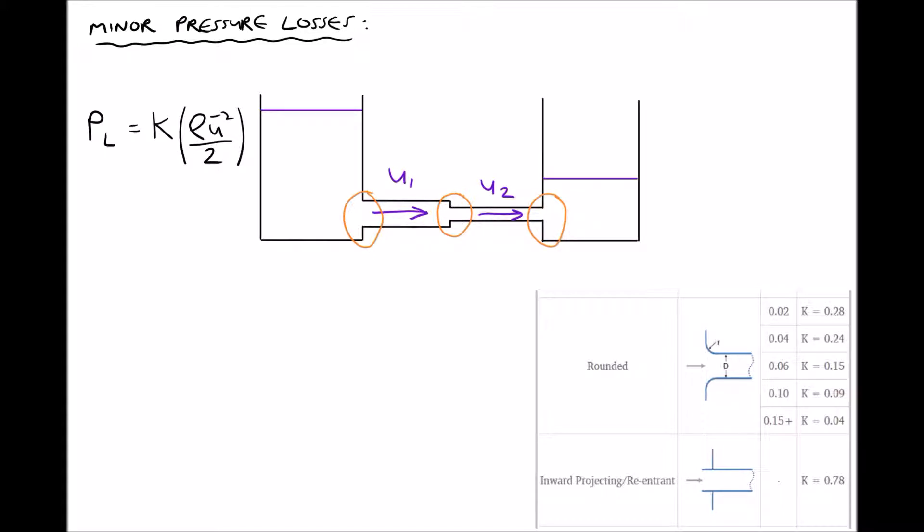There's only really one formula that we need for calculating minor pressure losses. We see on the left hand side where the pressure loss equals K times ρ times ū squared over 2. So PL represents the pressure loss, K is something called the resistance coefficient, ρ is the density of the fluid, and ū bar is the mean velocity squared.